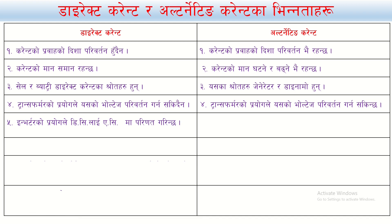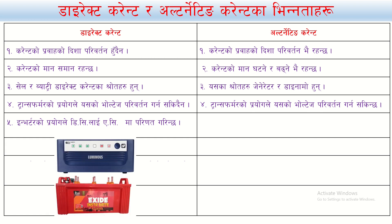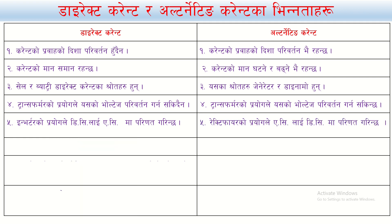An inverter allows us to convert DC to AC. We can use this inverter as well. If we have a battery in the house, we can use the inverter to convert the DC from the battery into AC. The inverter means it takes DC input and outputs AC. Then we can change DC to AC using the inverter.